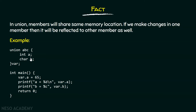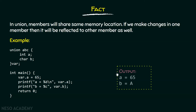For example, we have this union abc which consists of two members a and b, and here is a variable of type union abc. Just like structures, we can declare a variable of type union abc, and this variable can access the members of the union using the dot operator. Here, var.a is assigned the value 65. If we print var.a as well as var.b on the screen, we get: a equals 65 and b equals capital A.